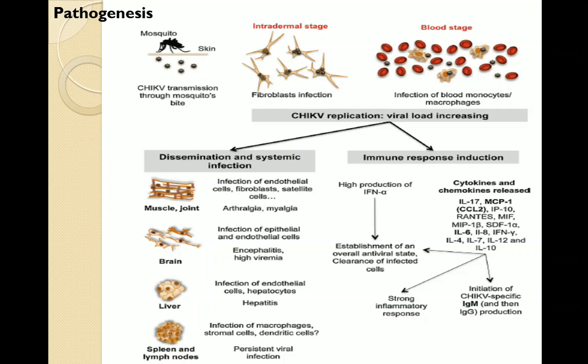On long-term duration, four types of cells are affected: muscle and joint cells, brain cells, liver, spleen and lymph nodes — if the virus persists in the body. The immune system is activated in response through cytokines and chemokines.